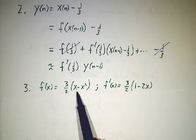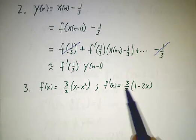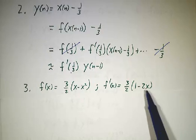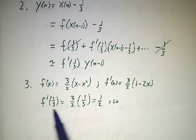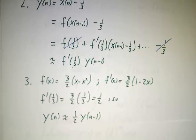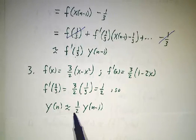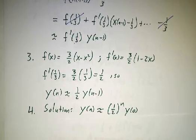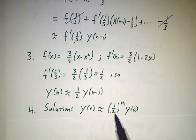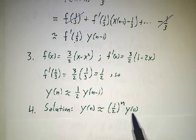So in our case, f of x is 3 halves of x minus x squared. f prime of x is 3 halves minus 2x. f prime of 1 third is 1 half. So our equations are that y today is roughly 1 half of y yesterday. And what's the solution? Well, it's just every day we multiply by 1 half. So y of n is 1 half to the n times y of 0.